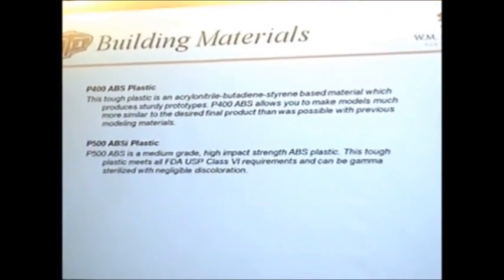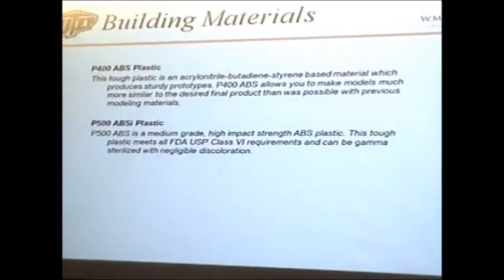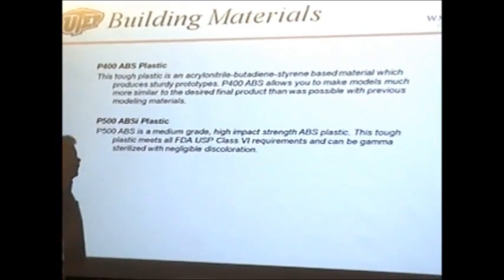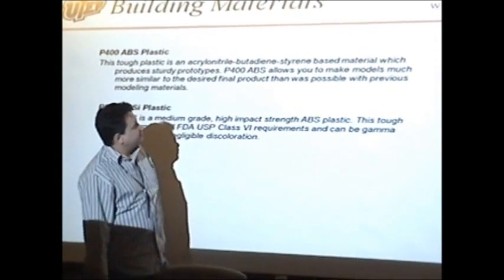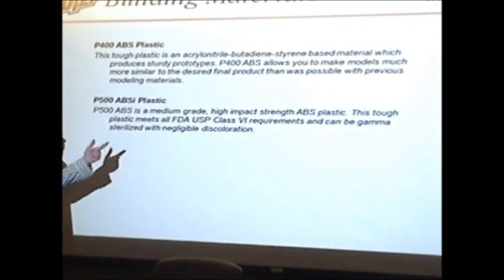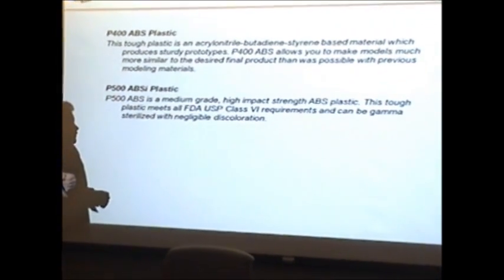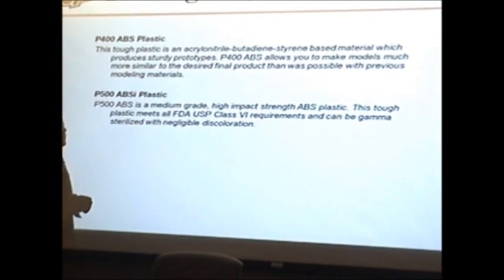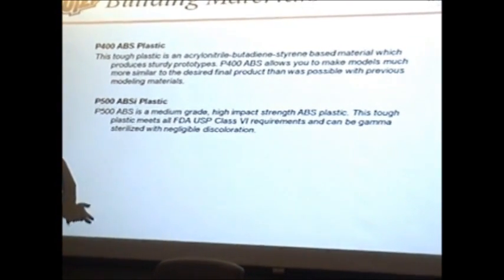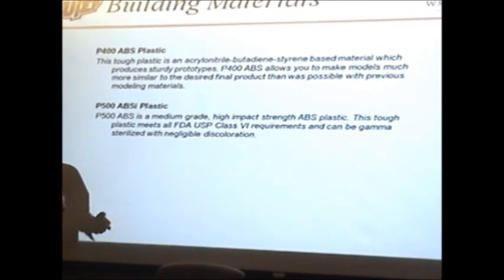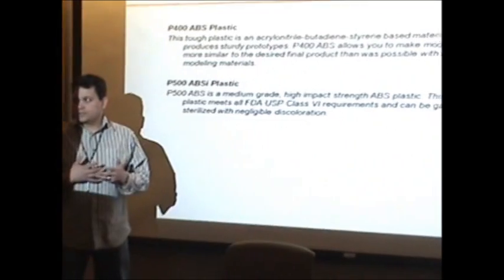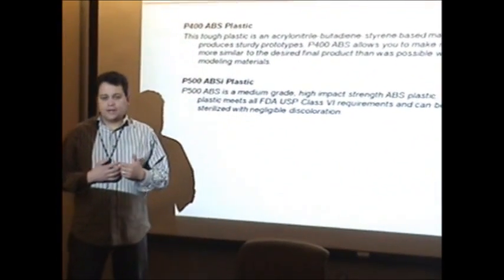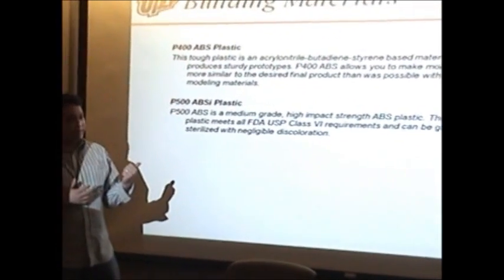The ABS, this is a tough plastic. The name is acrylonitrile butadiene styrene base material, which produces sturdy prototypes. It allows you to make models much more similar to the desired final product part. Like we said about other materials, they use materials that continue processing, changing properties. This material, which is a thermoplastic, it doesn't.